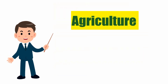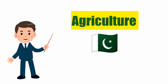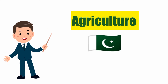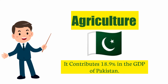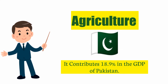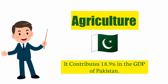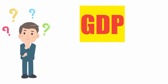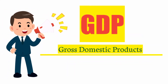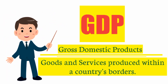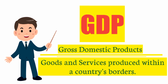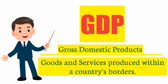The agriculture sector in Pakistan plays a central role in the economy. It contributes almost 18.9% — nearly 19% — to Pakistan's GDP. GDP means Gross Domestic Product: the market value of all finished goods and services produced within a country's borders.